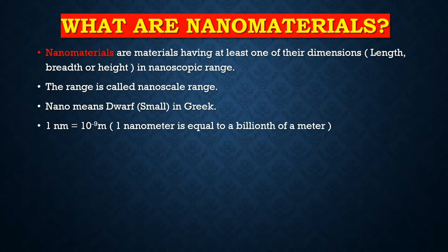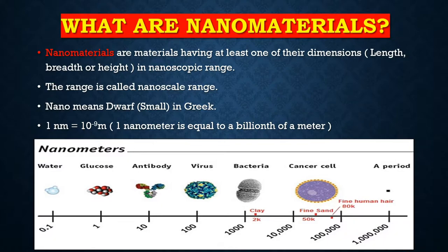1 nanometer equals 10 to the power of −9 meters, and 1 nanometer is equal to a billionth of a meter. To understand how small that is: if you take a 1-meter rod, cut it into 1 billion equal pieces, each piece has a length of 1 nanometer. Just imagine 1 billion pieces — that is how small it is. You can see a comparison here: a water molecule has a diameter of 0.1 nanometers, glucose is 1 nanometer, and an antibody is 10 nanometers.